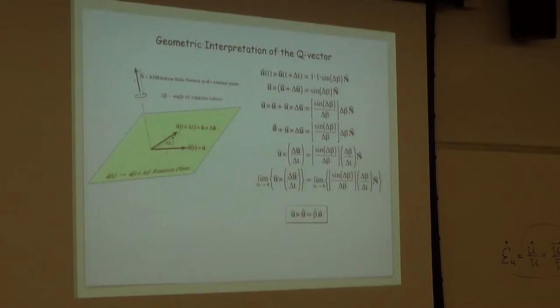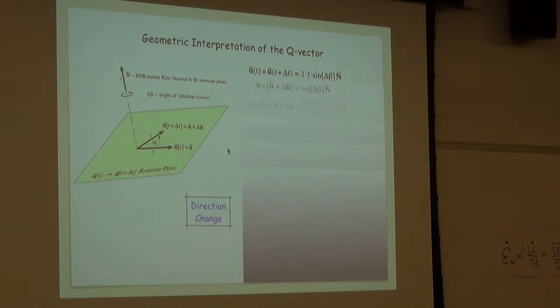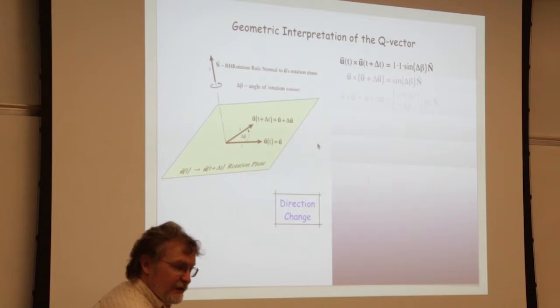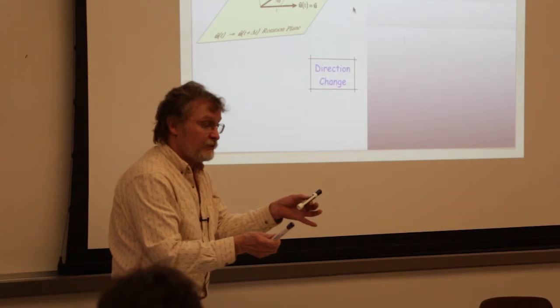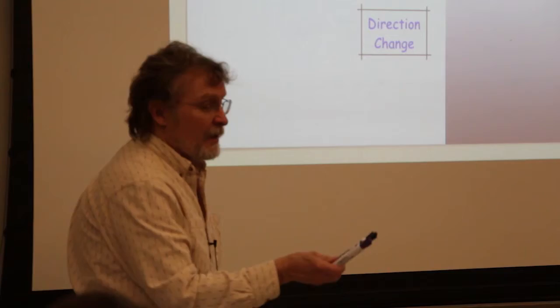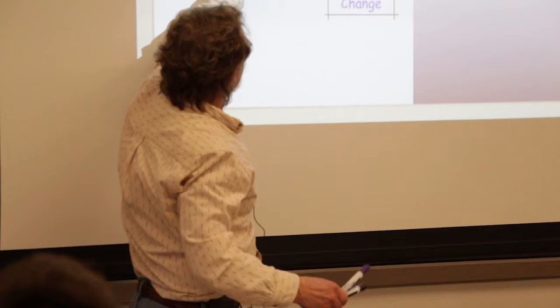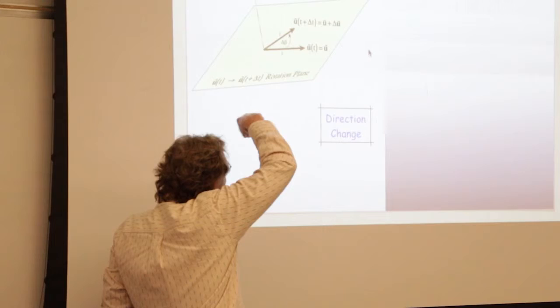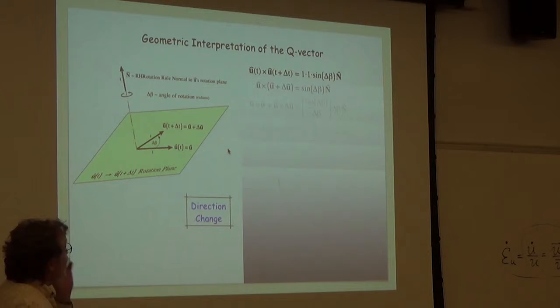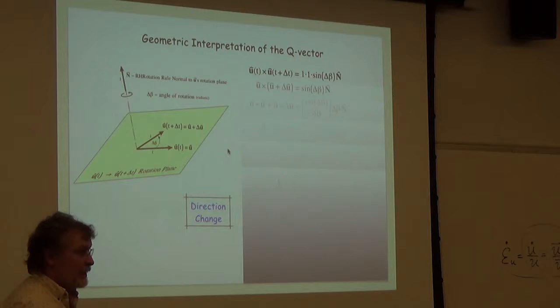I'm going to imagine that our unit vector looks like this at time t, and a little bit later at t plus delta t. The only thing a unit vector can do is rotate — change its direction. So a little bit later, suppose it looks like this. I define delta beta as the angle between the vector at t and t plus delta t — the angle of rotation. If you bring those two vectors together, those two vectors determine a plane: the t to t plus delta t rotation plane. Within that plane the vector has rotated, so I've added the right-hand rotation rule normal to that plane — capital N vector — and delta beta is the angle of rotation measured in radians.